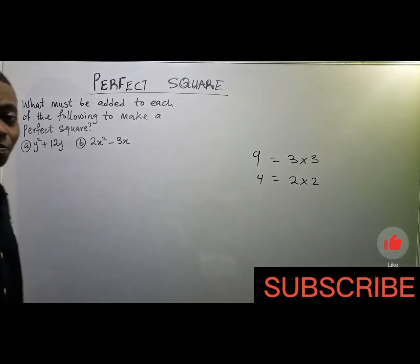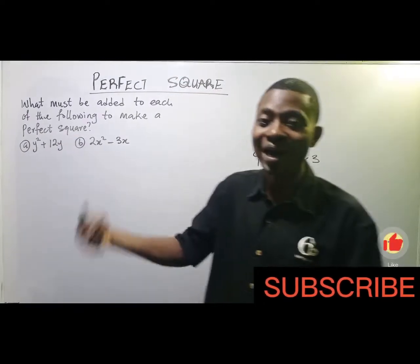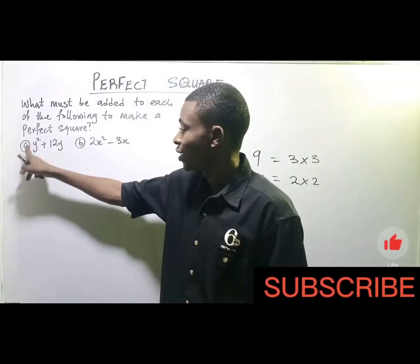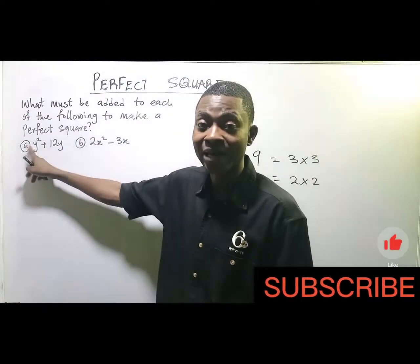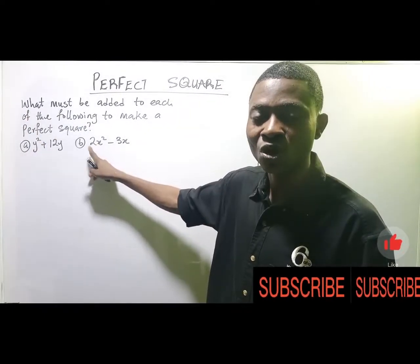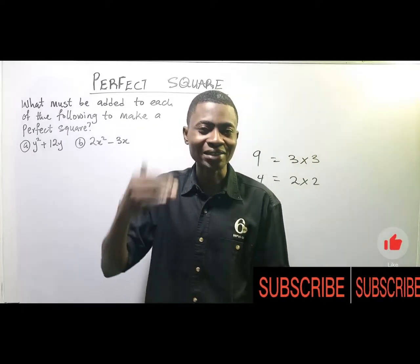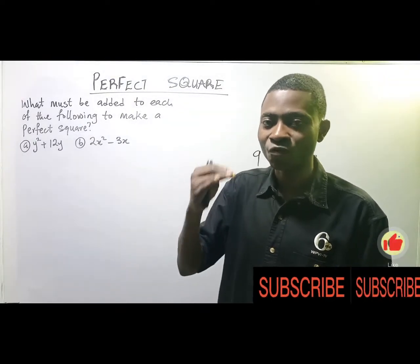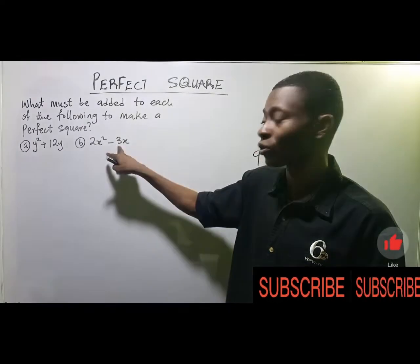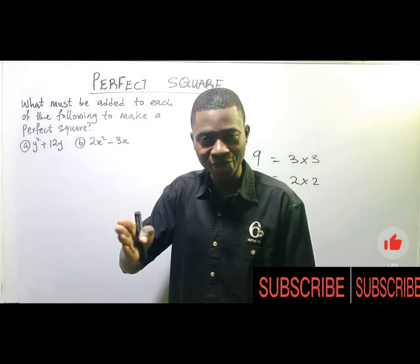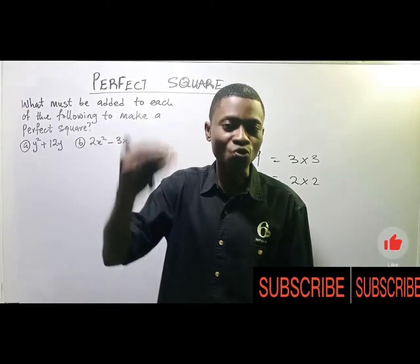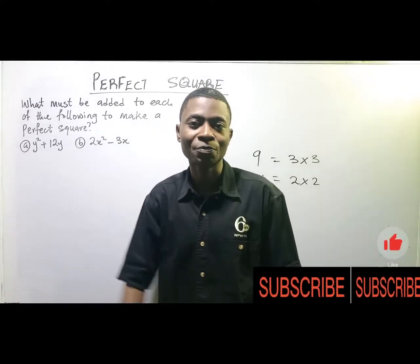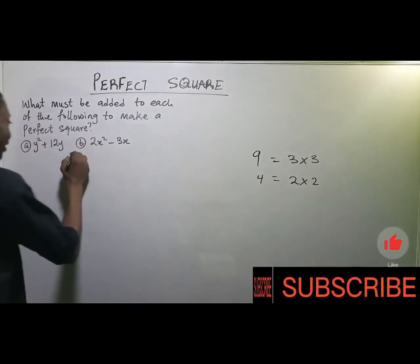Before you proceed, you must make sure that the coefficient of y² (or x² or whatever squared term is used) is one. Now here are the steps: first, take the coefficient of the linear term and half it. After halving it, square it. After squaring, add it to the expression — and that is what you add to make the expression a perfect square.